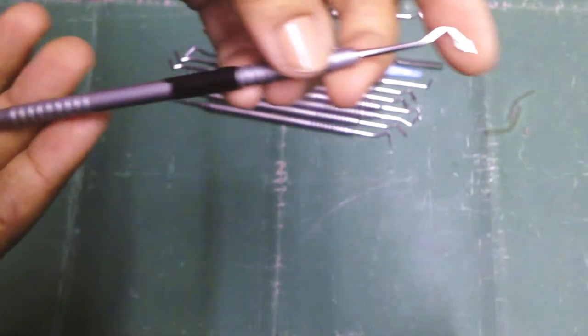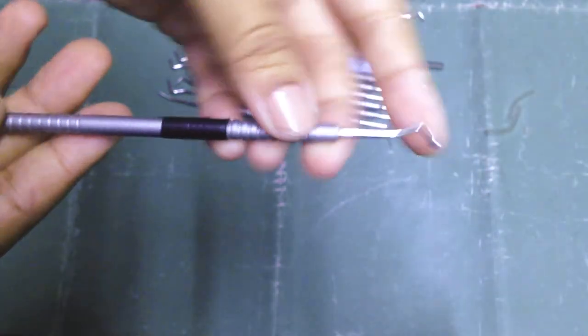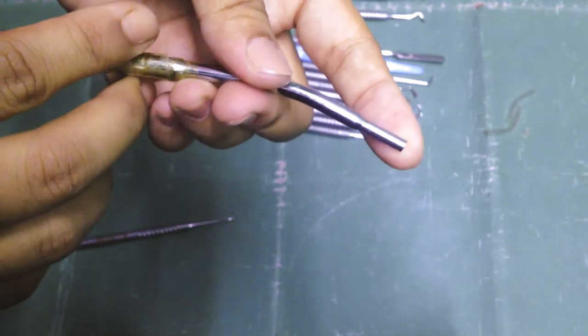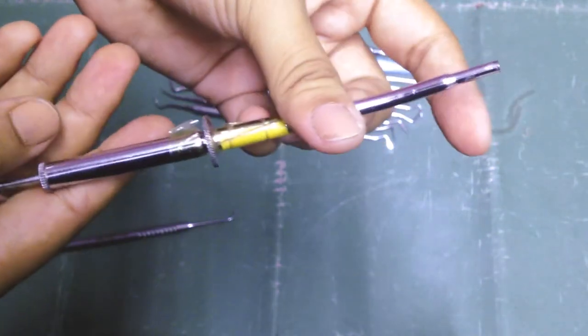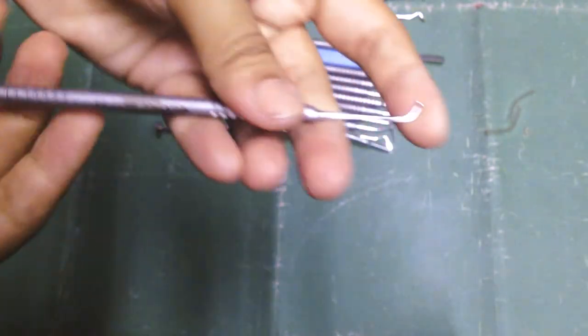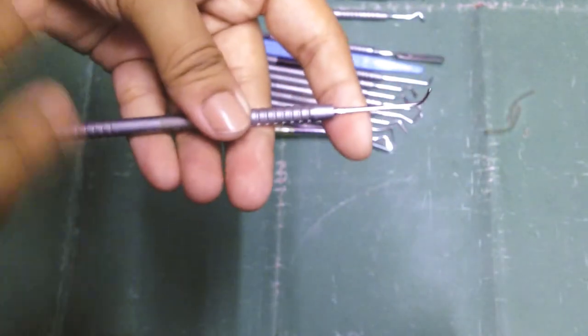Then this is a diamond-shaped carver. We have an amalgam carrier that I absolutely forgot. This is an amalgam carrier. Then we have a burnisher. This particular one is a ball burnisher.